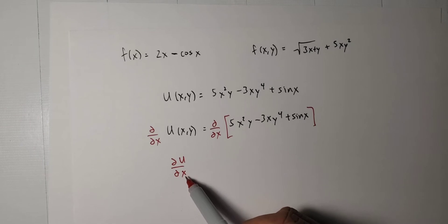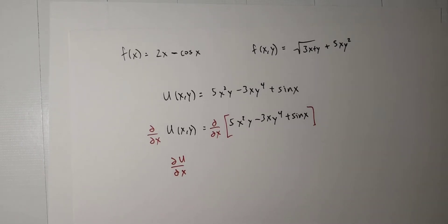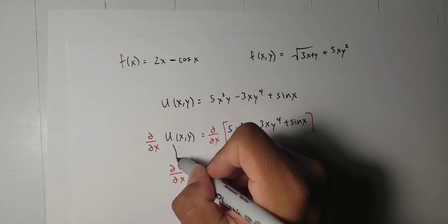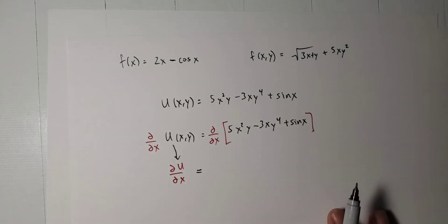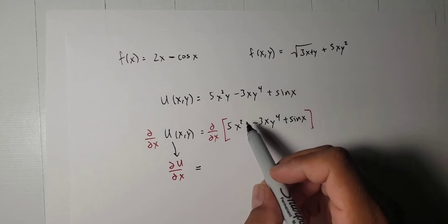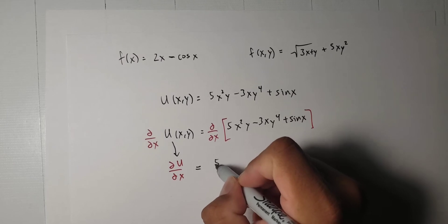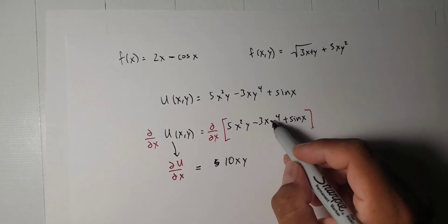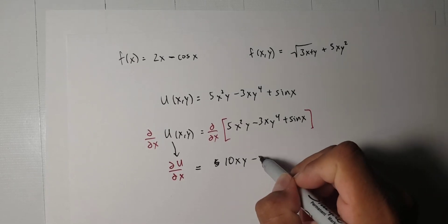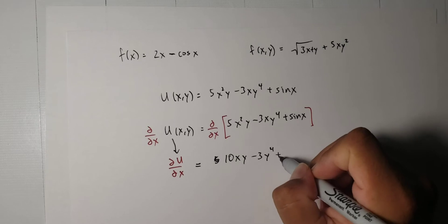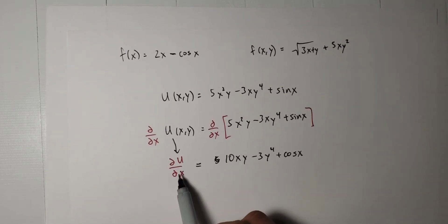The left-hand side becomes del u del x, meaning you're taking the partial derivative of u with respect to x and treating other variables as constants. Taking the derivative of 5x squared y gives 10xy — bring down the 2, multiply by 5, subtract 1 from the exponent. Then minus 3y to the fourth, since y is treated as constant. The derivative of sine x is cosine x, so plus cosine x.